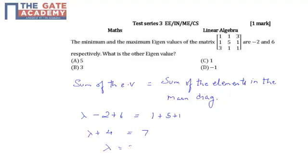Using this we get lambda equal to 3, which is option B. If you know the simple properties of eigenvalues, then we can simply solve such kinds of questions. In this case, our option is B, that is 3. Thank you.